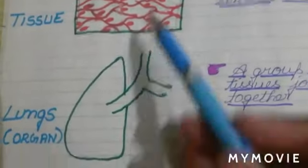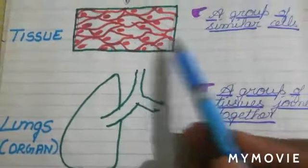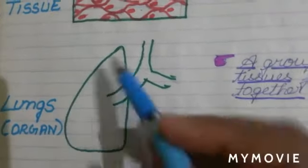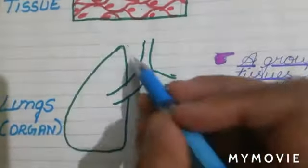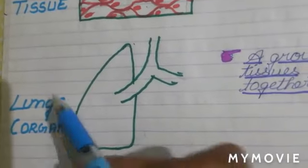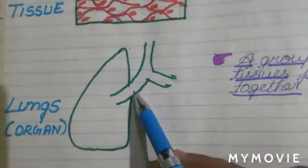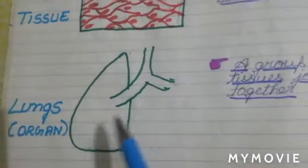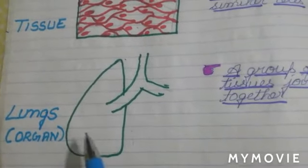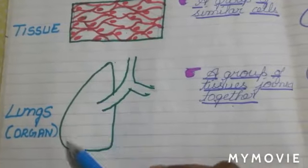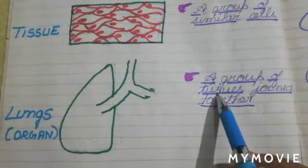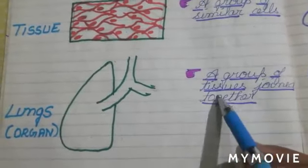In the same way, a group of tissues also join together to form an organ. You can see here — what's this? This is a lung. This is an organ. So, cells join together to form tissue, and tissues join together to form an organ of your body. An organ is a group of tissues.